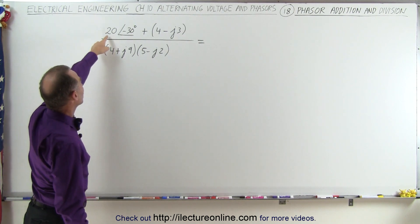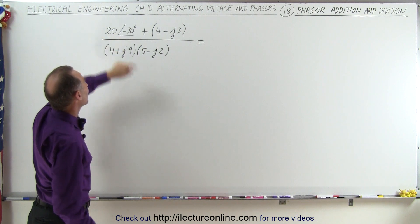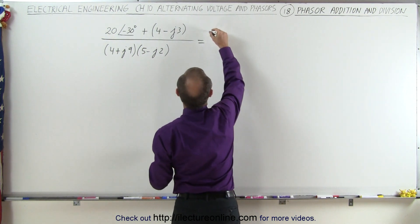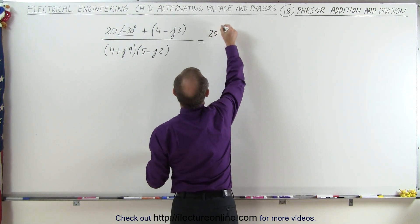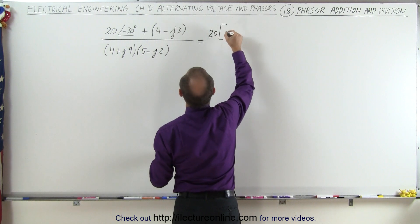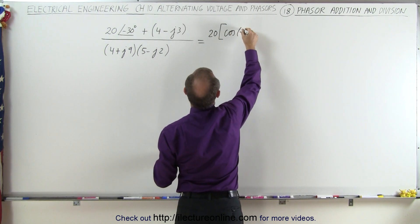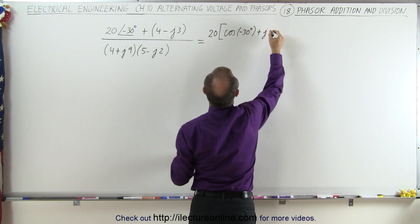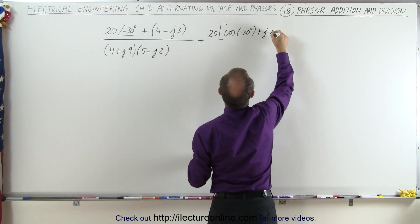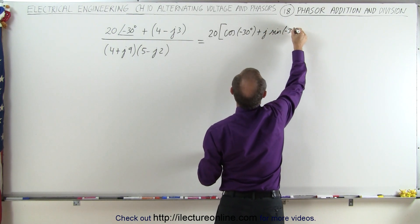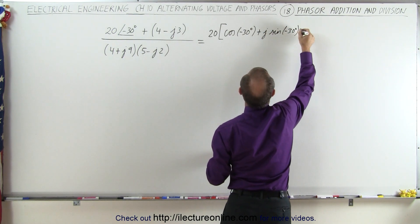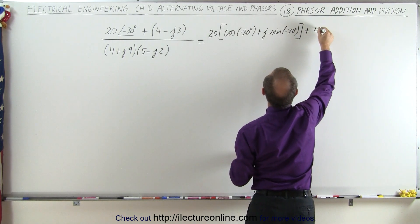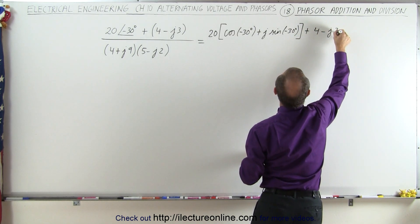First, what we want to do is convert this into the real and imaginary part. So this becomes equal to 20 times the cosine of minus 30 degrees plus j times the sine of minus 30 degrees. And that's then going to be added to a 4 minus j3.